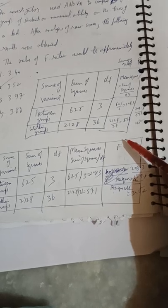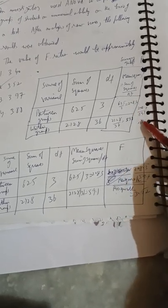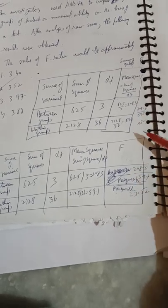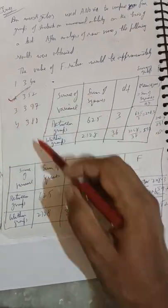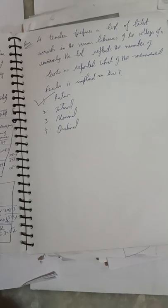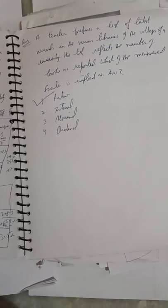Now, mean sum of squares between groups, which is 208.3, divided by 59.1, which comes out to be 3.52. So the correct answer is option B. Next, we move to next question.